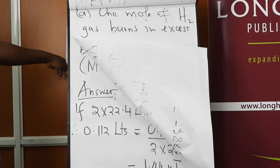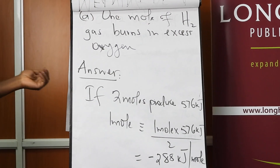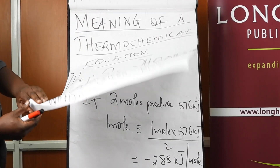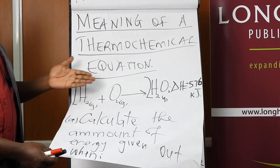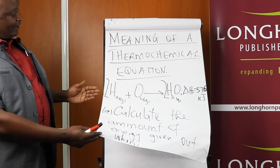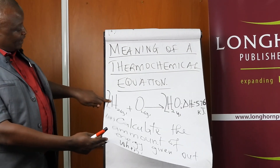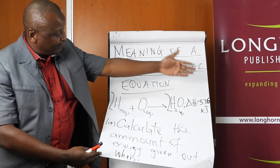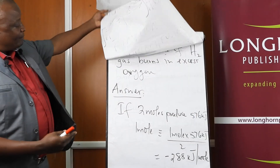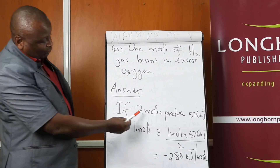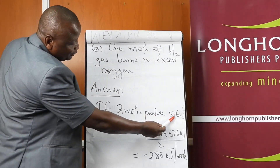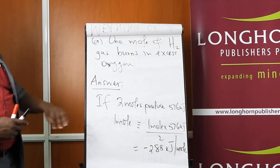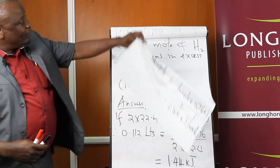You can be asked to calculate the amount of energy given out when, for example, one mole of hydrogen gas is burnt in excess oxygen. Using the mole ratio as in normal equations: if two moles of hydrogen gas give us this amount of energy, what about one mole? Substituting gives you the corresponding amount of energy.